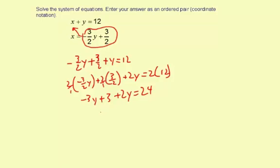Combine like terms. The negative 3y plus 2y is a negative y, and then plus 3 equals 24. So then I'm going to subtract 3. So negative y equals 21.